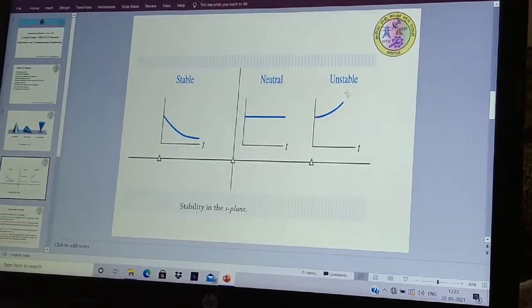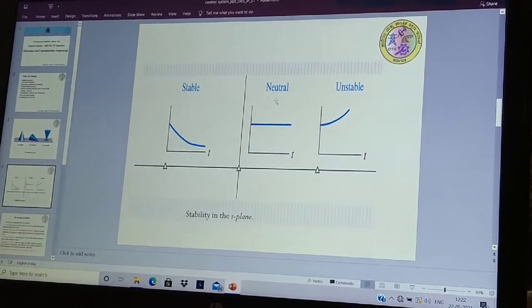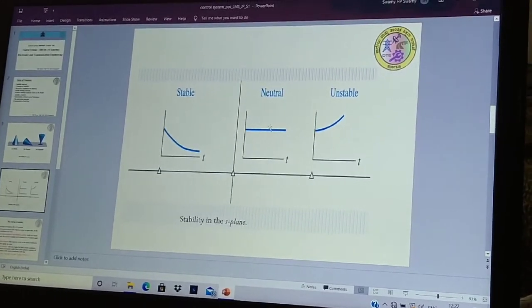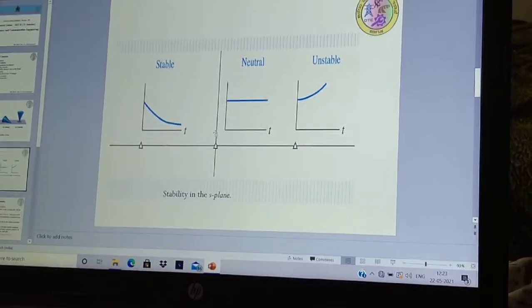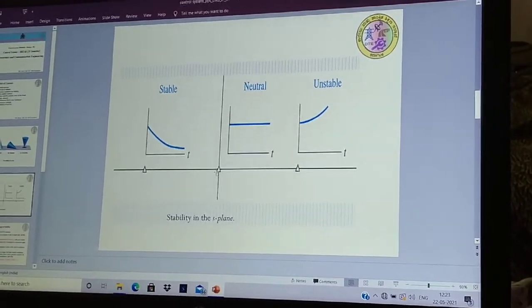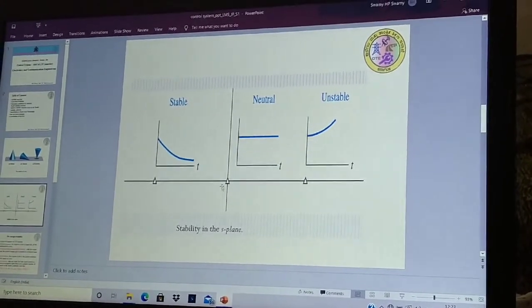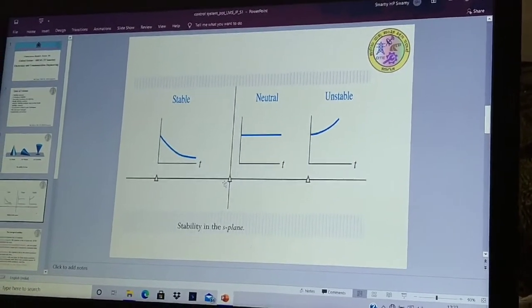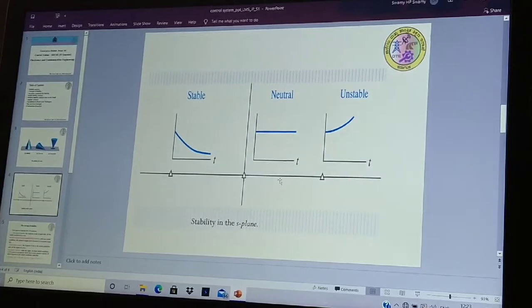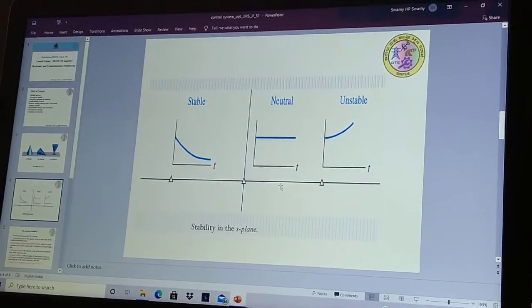Right side, your system unstable or it may be neutral. So this is how you are going to see. That means a stable system will be always left side of the S plane. I will explain next how it will be left side of the S plane, how it will be unstable or neutral at the right side of the S plane.